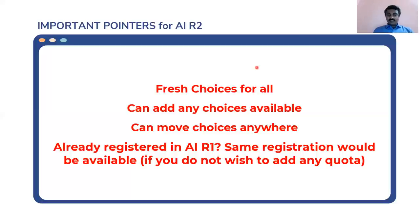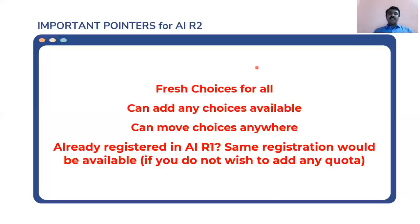Second pointer: if you've already registered in All India Round 1 and you don't want to change your quota — say you registered for AAQ and DNB only and want to continue with AAQ plus DNB — the same registration will work. It doesn't matter whether you were allotted a seat and did not join, whether you joined and then resigned, whether you were not allotted a seat, or whether you hold any other seat. The same registration as AIR1 will be available for you to log in. You will only need to make a change in registration if you want to add a quota, such as deemed, that you were not registered for earlier.